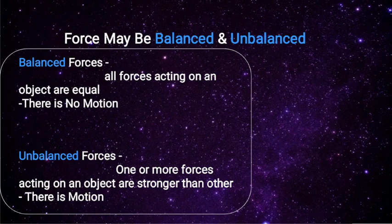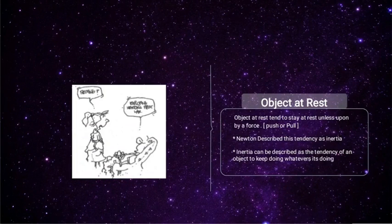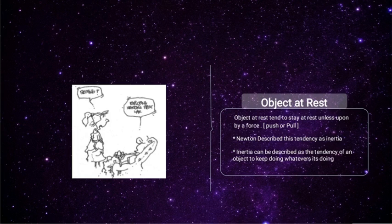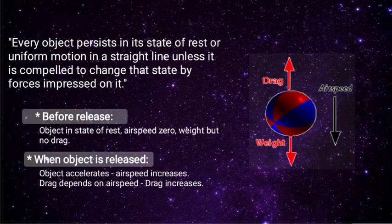An object at rest tends to stay at rest unless acted upon by a force. Newton described this tendency as inertia. Inertia can be described as the tendency of an object to keep doing whatever it is doing. Every object persists in its state of rest or uniform motion in a straight line unless it is compelled to change that state by a force acting on it.